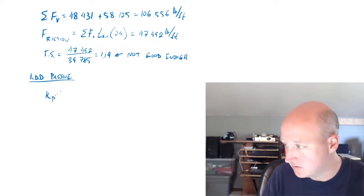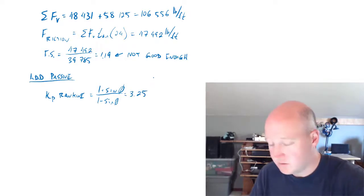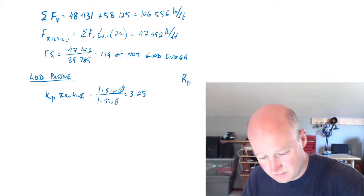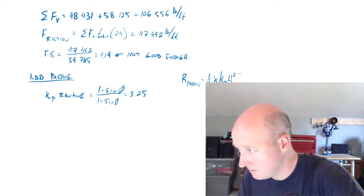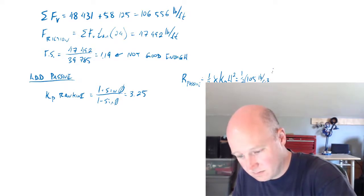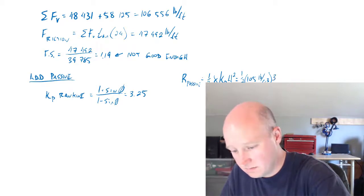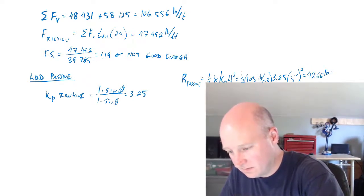So we've got to get our K for passive. This is Rankine, not Coulomb. So then the passive force. And it's only five feet deep. So we're adding 4,266.